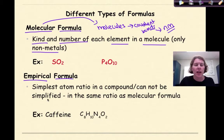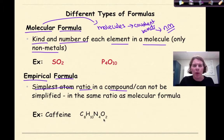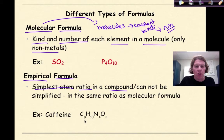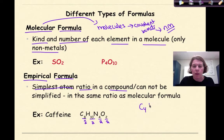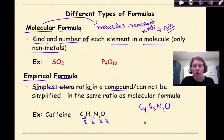Then we have the empirical formula, defined as the simplest atom ratio in a compound — it can't be simplified any further and is in the same ratio as a molecular formula. The molecular formula for caffeine is C8H10N4O2. To find the empirical formula, I look at each number and find what divides into all of them: 8, 10, 4, and 2 are all even, so divide by 2. The empirical formula is C4H5N2O, giving a ratio of 4 to 5 to 2 to 1.